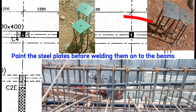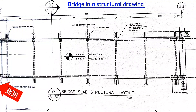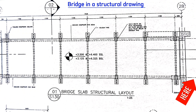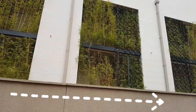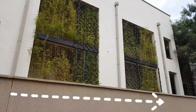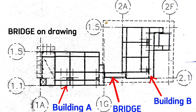Always paint these steel plates with gloss paint before welding them onto the steel in the beams, to avoid corrosion. This is the bridge that connects this building to the other. People move from inside to this part of the building via this bridge. This is building A and this is building B, joined together by the bridge.